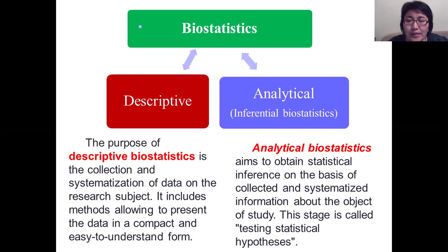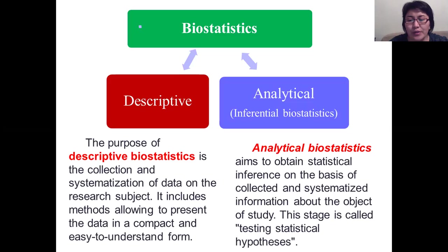Analytical biostatistics aims to obtain statistical inference on the basis of collected and systematized information about the object of study. This stage is called testing statistical hypotheses. The first group answers the question: are there any differences between the groups in terms of some indicator? The second group allows proof of the existence of a relationship between two or more indicators.